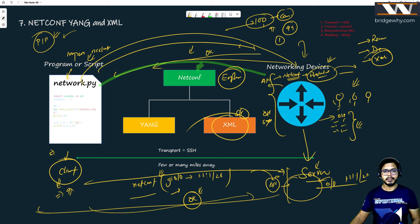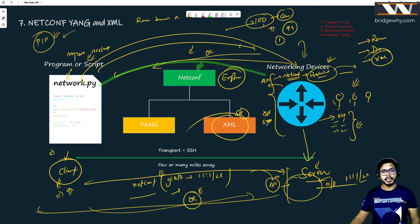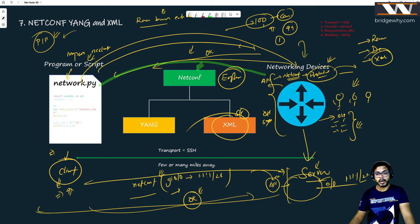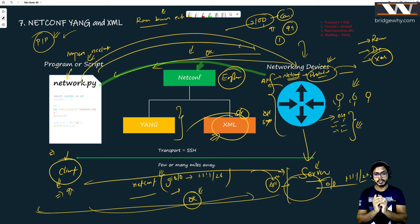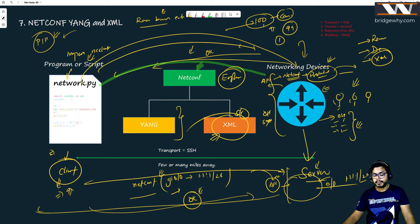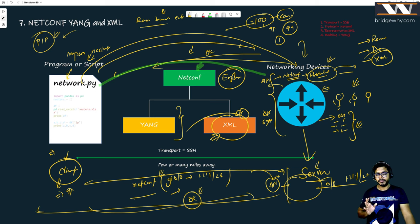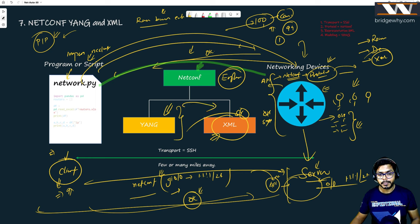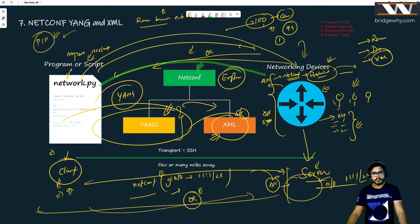You cannot send a message in an unstructured way. Just like 'rahul banana eats' is understandable to a human but has no grammar — if there are no rules on how to represent the data, it's a problem. The router understands that if a message comes in a structured format in NETCONF protocol, it will obey; otherwise it won't. The router says: 'If your message comes with this grammar and this script, I will obey it.' That grammar is YANG.